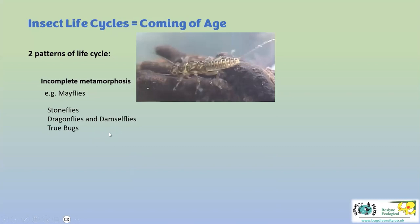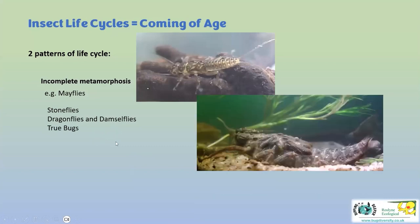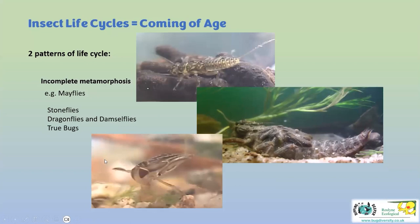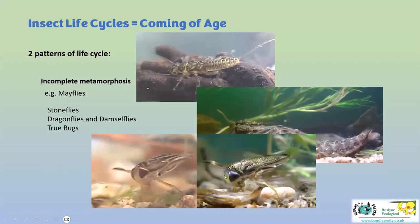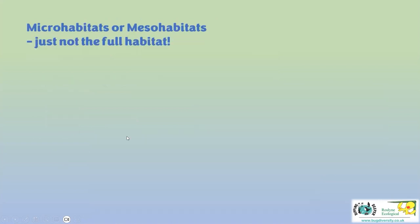Stoneflies, dragonflies and true bugs also have nymphs with this incomplete metamorphosis. With the lesser water boatman you can really see how little changes from nymph to adult - the nymph has wing buds, the adult simply has fully expanded wings covering the body with a rather nice pattern over it.